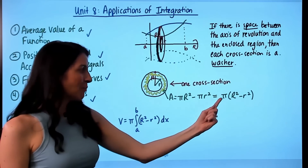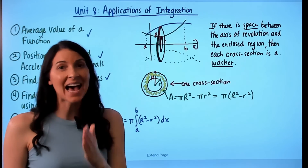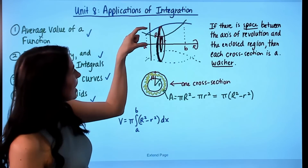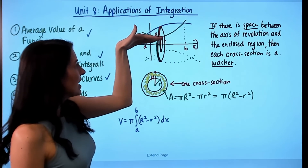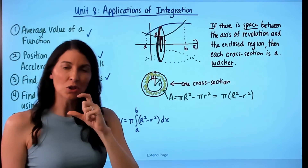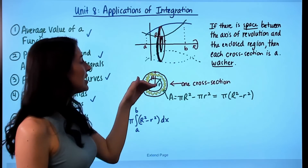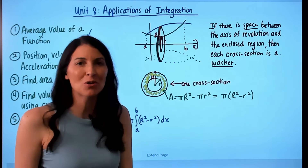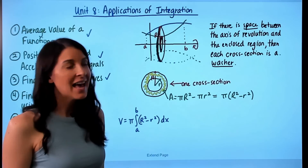Set up the integral with π out front, from a to b as the x-value intersection points of the enclosed region, since slices are taken perpendicular to the x-axis. The large radius R comes from the upper function minus the axis of revolution, and the inner radius r comes from the closer function minus the axis of revolution. If the axis of revolution is above the enclosed region, top becomes the horizontal line, and all radii are written in terms of x.